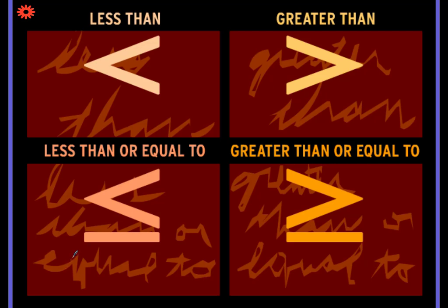These are the inequality symbols you are familiar with from elementary school. The less than symbol — I make an L with my left hand, thumb and forefinger, squish it, and it looks like the less than symbol. The greater than symbol is the opposite of less than. Less than or equal to has half of an equal sign underneath the inequality, and greater than or equal to has one line under the symbol.